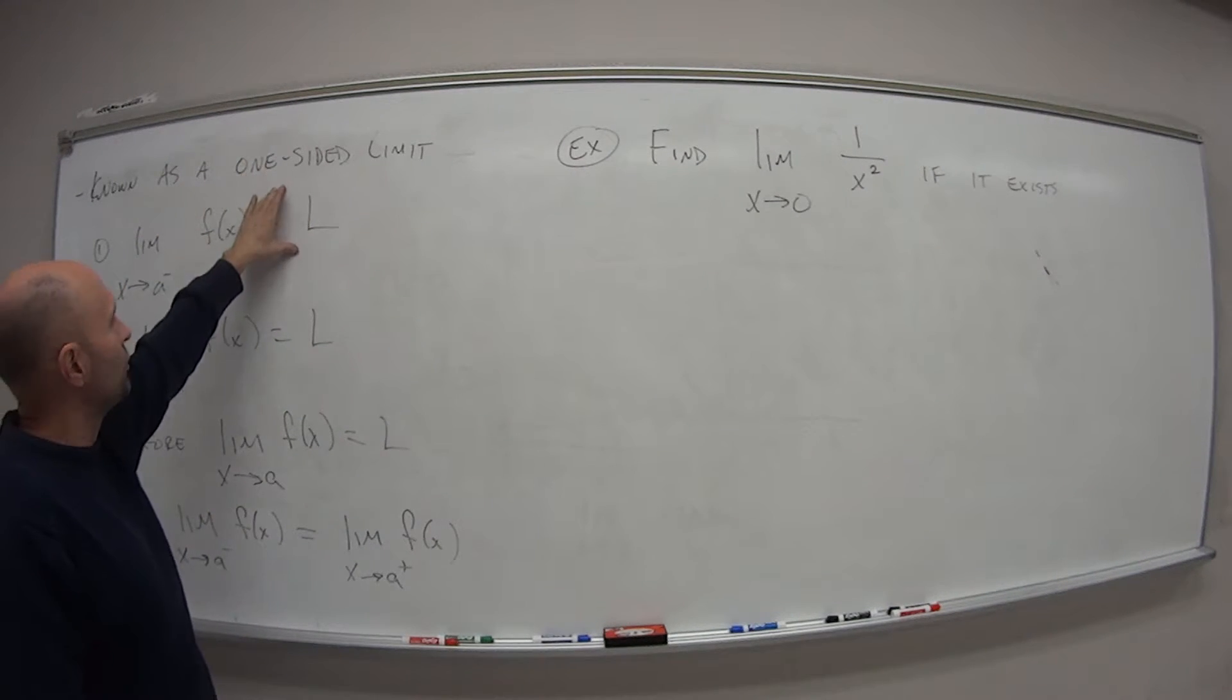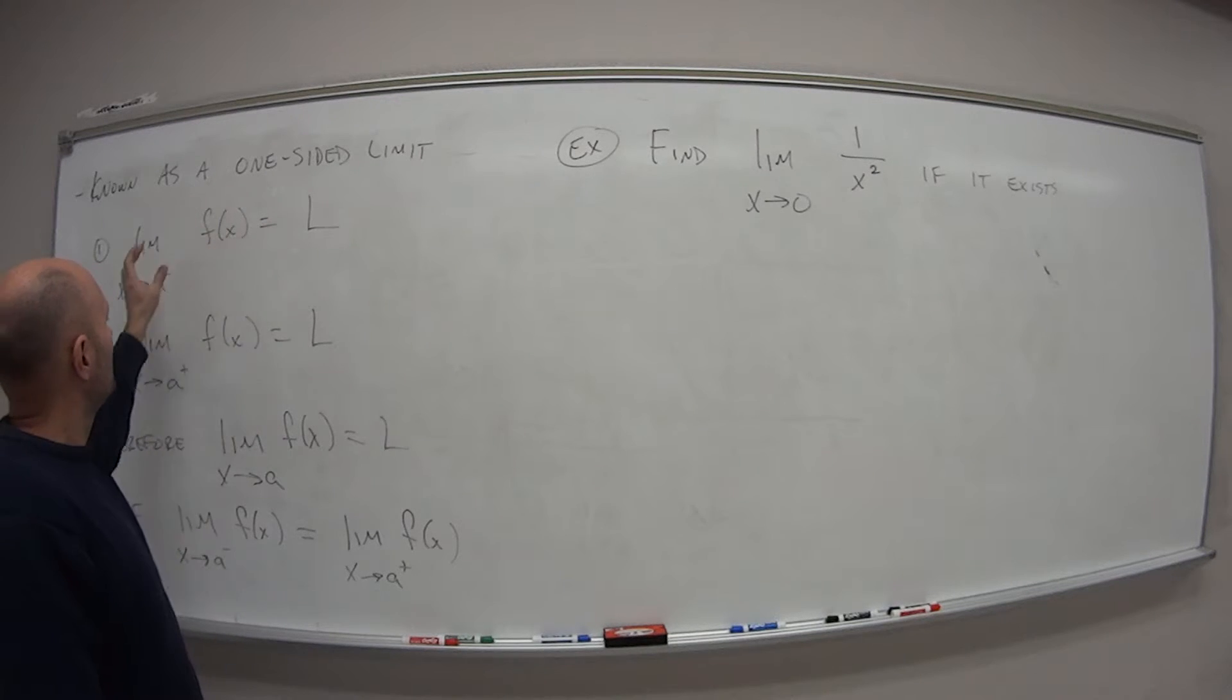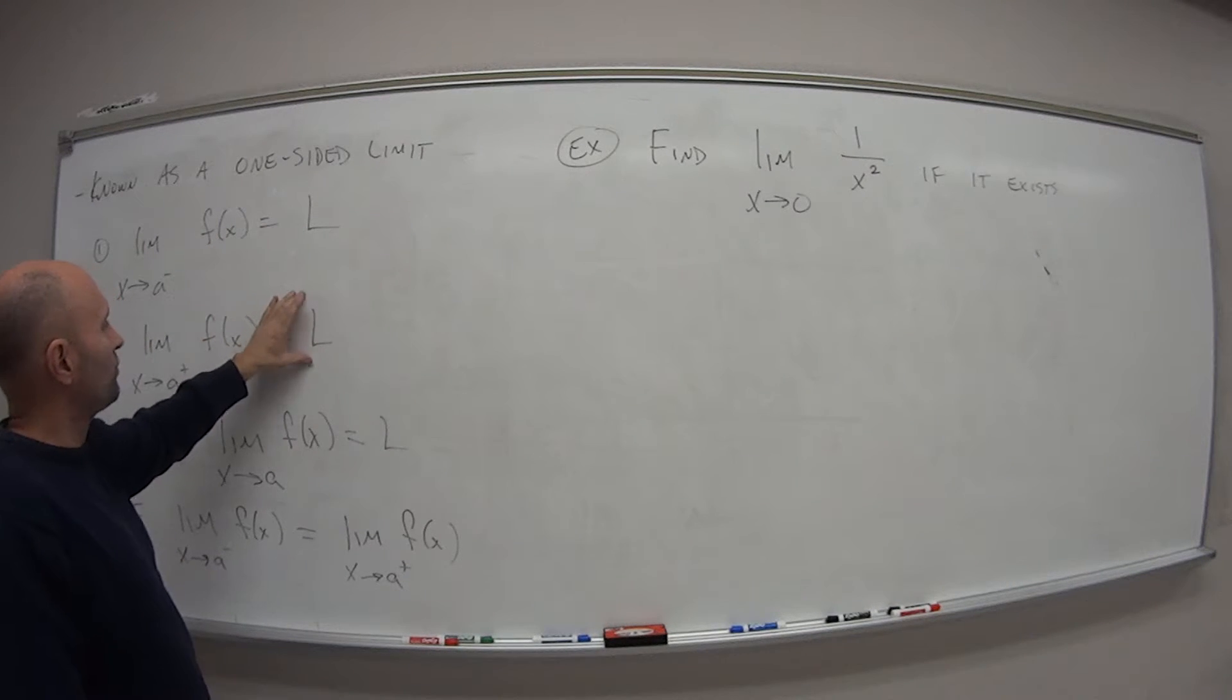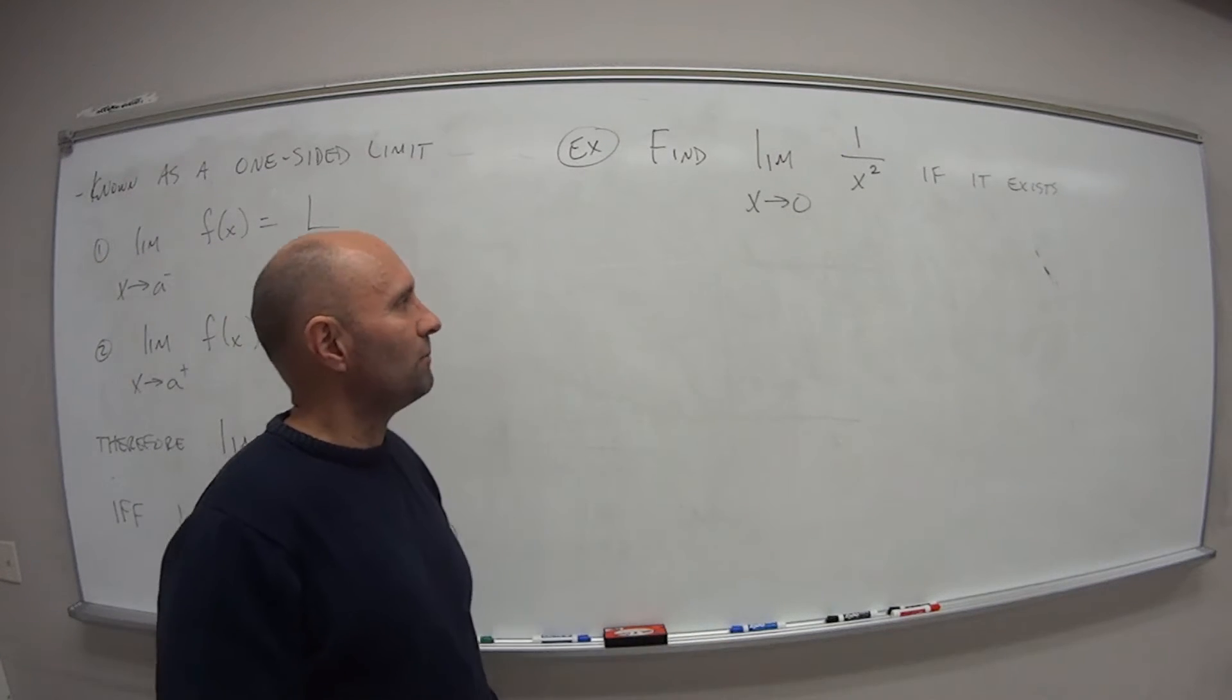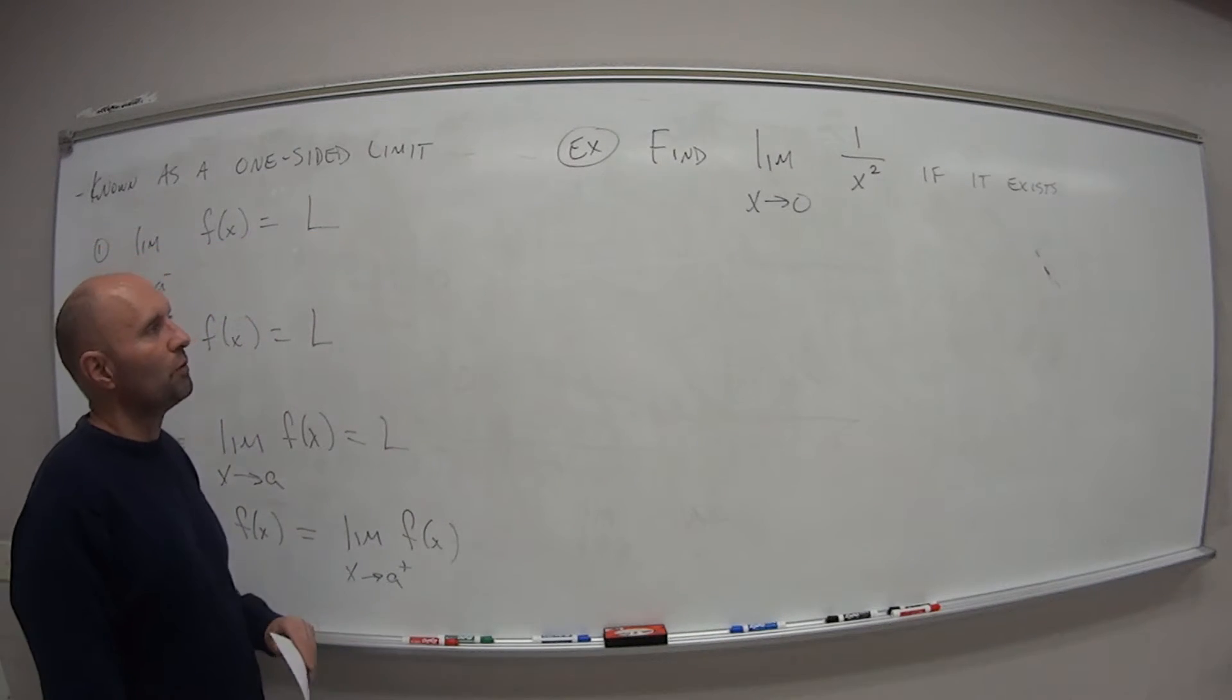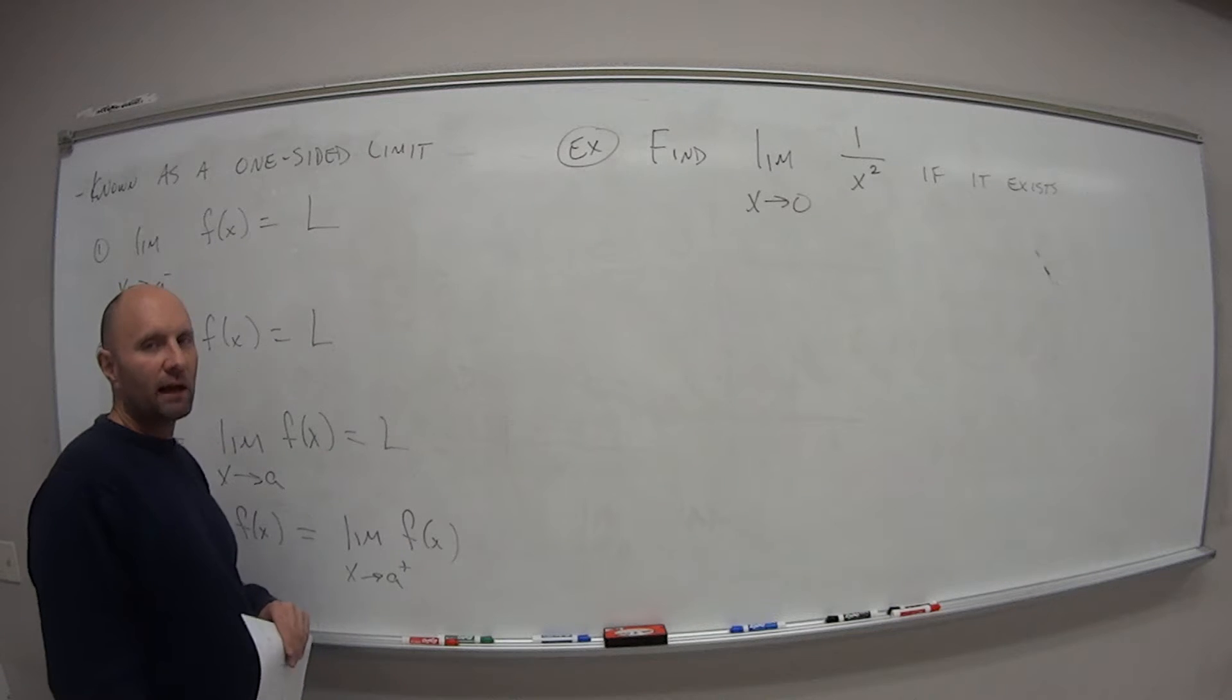Figure this, try to figure this out. Does this one have a limit? Easiest way, obviously we can't plug in 0 because that gives us a 0 in the denominator. So try this one-sided limit test. What's our value as we approach x from the negative side? What's our value as we approach the limit from the right-hand side? Are they the same? So go ahead and pause it if you want.